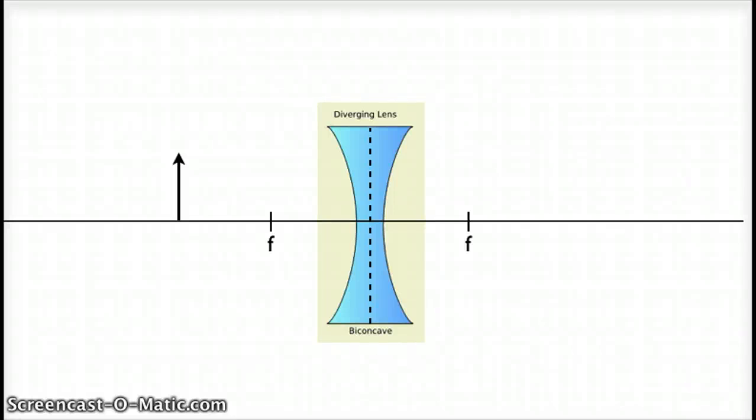Here I want to introduce the principal rays for a diverging lens so that we can draw ray diagrams for a diverging lens, similarly to how we drew them for a converging lens.